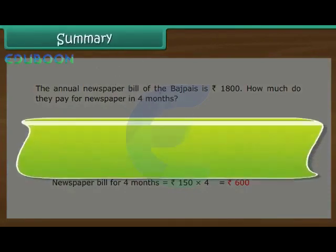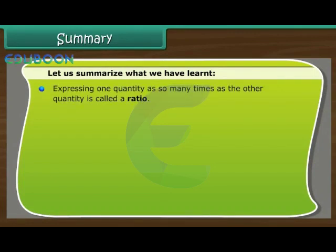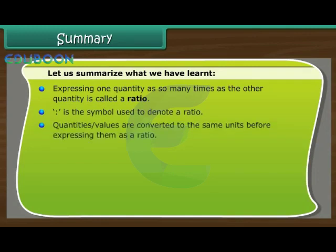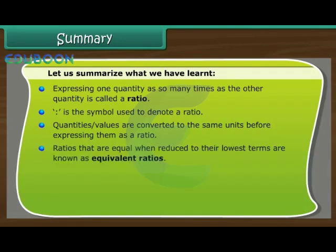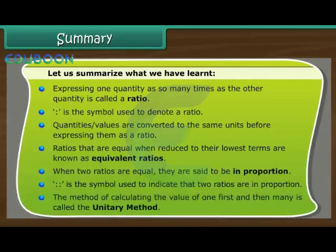Summary. Expressing one quantity as so many times as the other quantity is called a ratio. Colon is the symbol used to denote a ratio. Quantities and values are converted to the same units before expressing them as a ratio. Ratios that are equal when reduced to their lowest terms are known as equivalent ratios. When two ratios are equal, they are said to be in proportion. The method of calculating the value of 1 first and then many is called the unitary method.